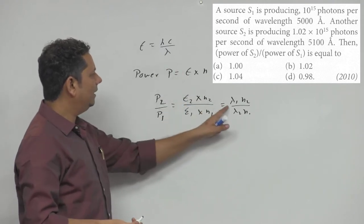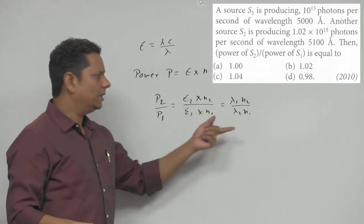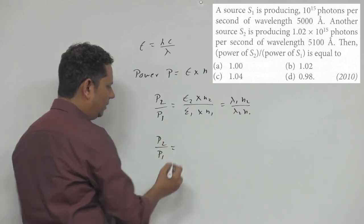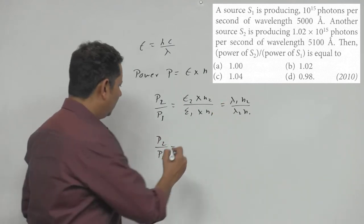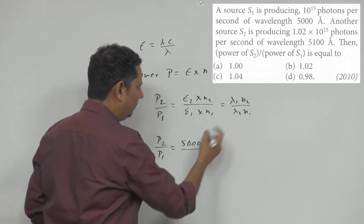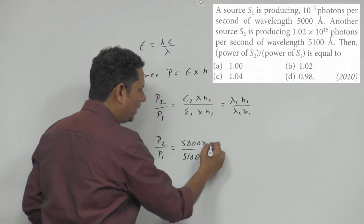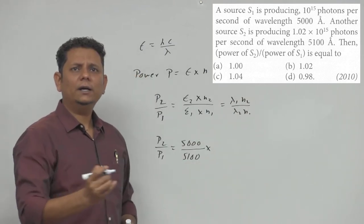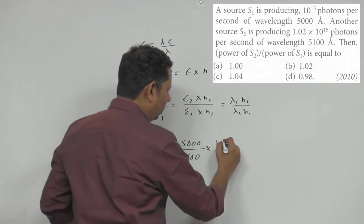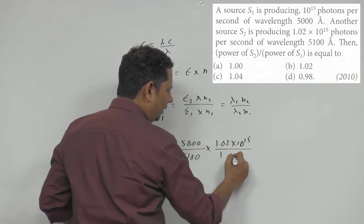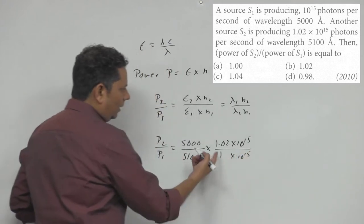Because power is inversely proportional to lambda. Just substitute the values. P2 divided by P1, the desired ratio, will be λ1 which is 5000, multiplied by n2 which is 1.02 × 10^15, divided by λ2 which is 5100, multiplied by n1 which is 1 × 10^15.